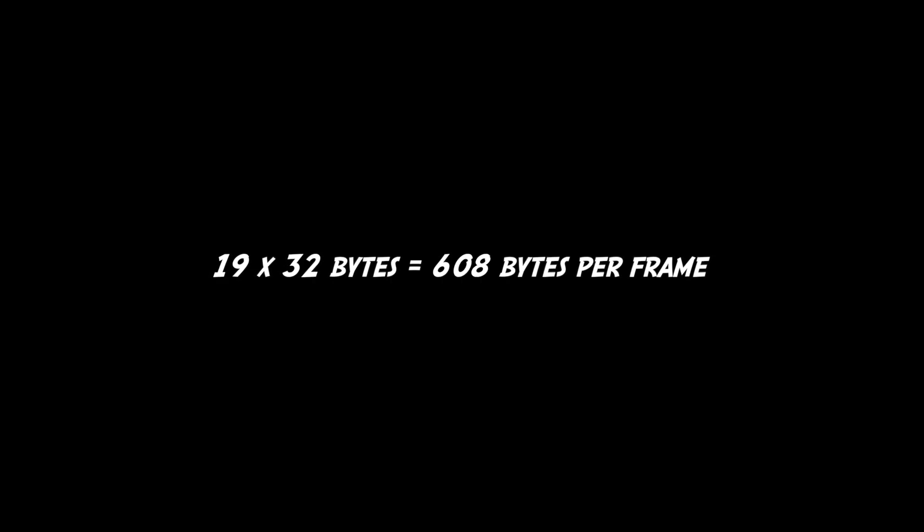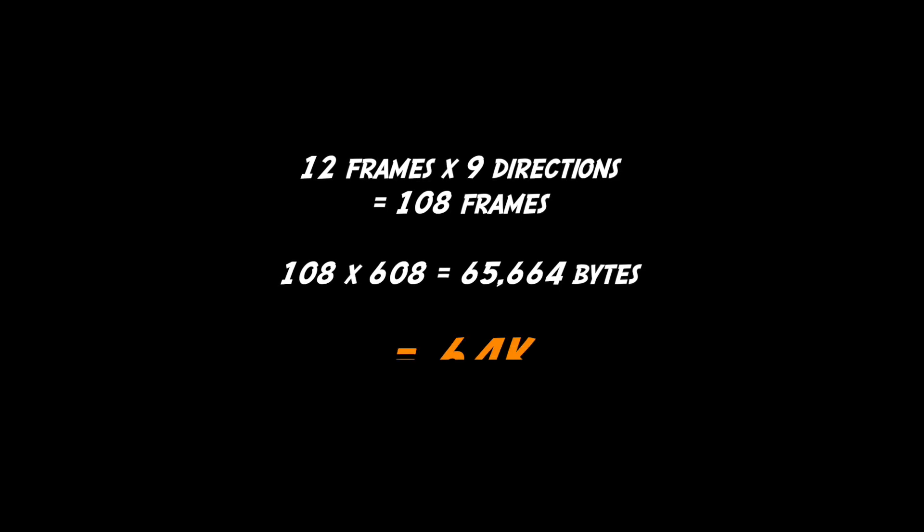So if we take an average of 19 characters instead of 36, that means we only use just 608 bytes per frame, which means the total memory for the run animation has dropped to just 64k. But is there yet more we can do?